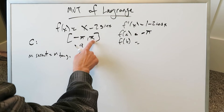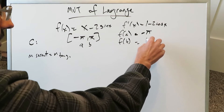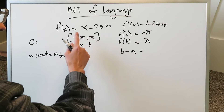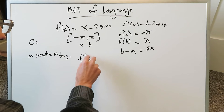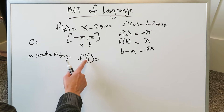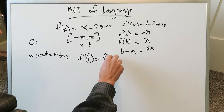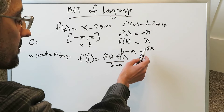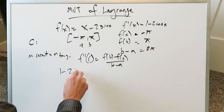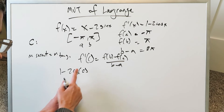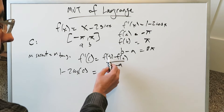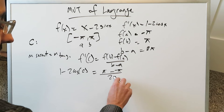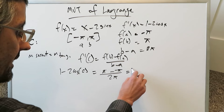Then find f(b): putting π in gives π - sin(π), and since sin(π) = 0, you just have π. Also compute b - a: π - (-π) = 2π. Now we apply the mean value theorem equation — the derivative at c equals [f(b) - f(a)] / (b - a). Placing c into the derivative gives 1 - 2cos(c). For the right side: [π - (-π)] / 2π = 2π / 2π, which simplifies to 1.